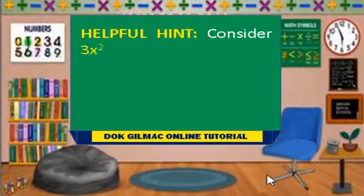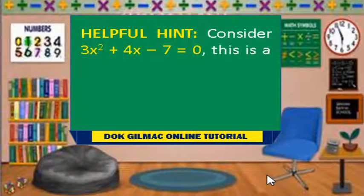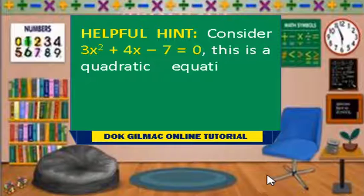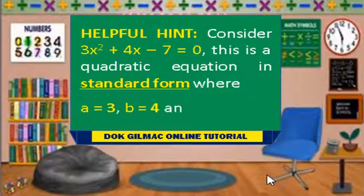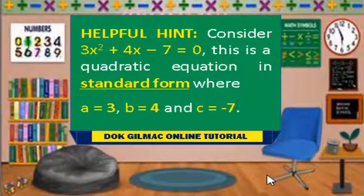Consider 3x squared plus 4x minus 7 equals 0. This is a quadratic equation in standard form, where a equals 3, b equals 4, and c equals negative 7.